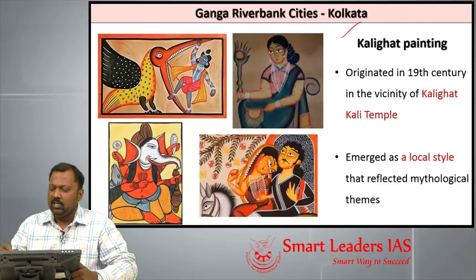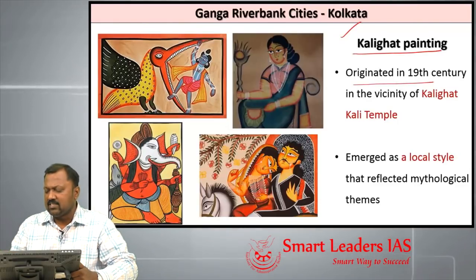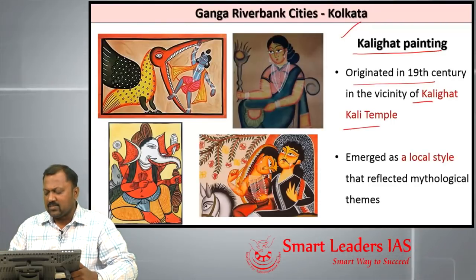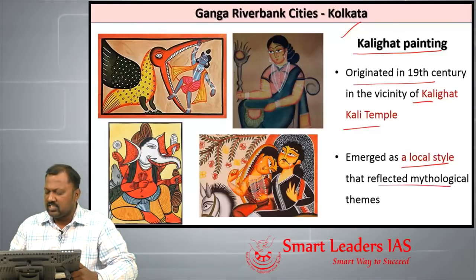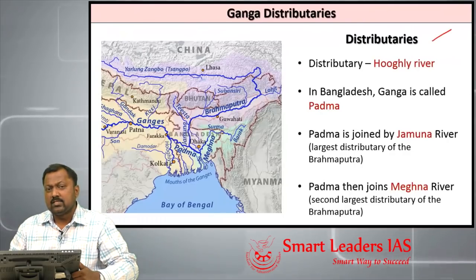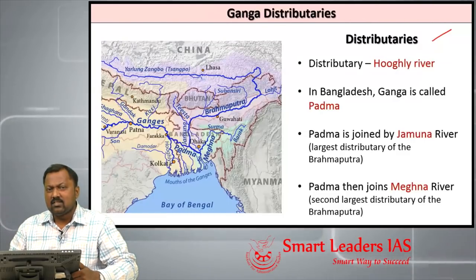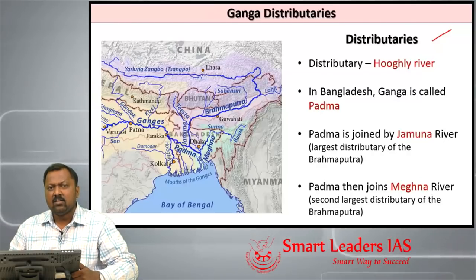An important painting associated with Kolkata is Kalighat painting, which originated around the 19th century in the vicinity of the Kalighat Kali temple. The important aspect of this painting is the local style which reflects mythological themes. So far we have seen all the cities along the banks of River Ganga. Kolkata is the last city on the banks of Ganga, and next we will cover the distributaries and delta.